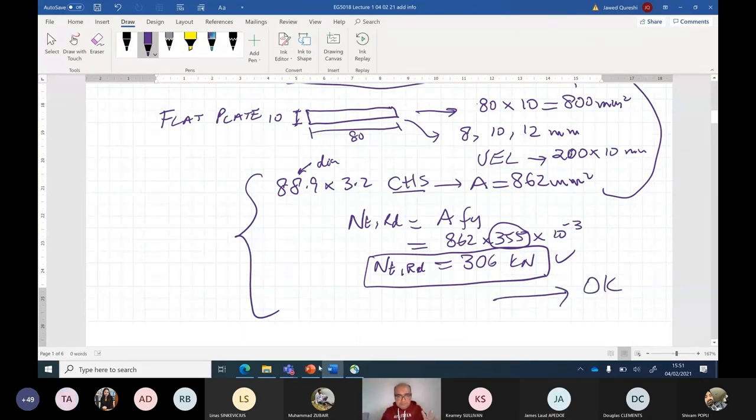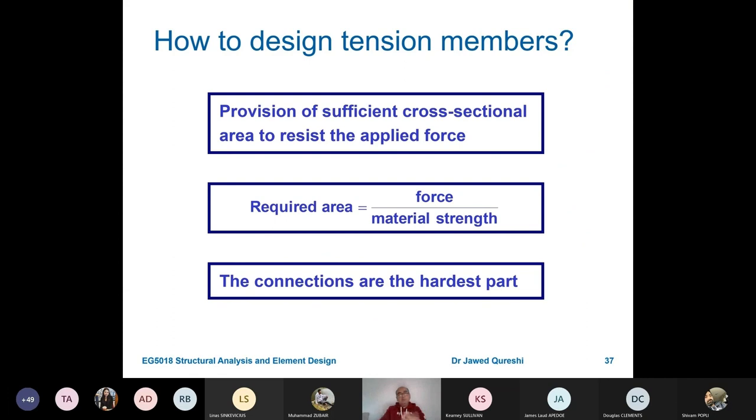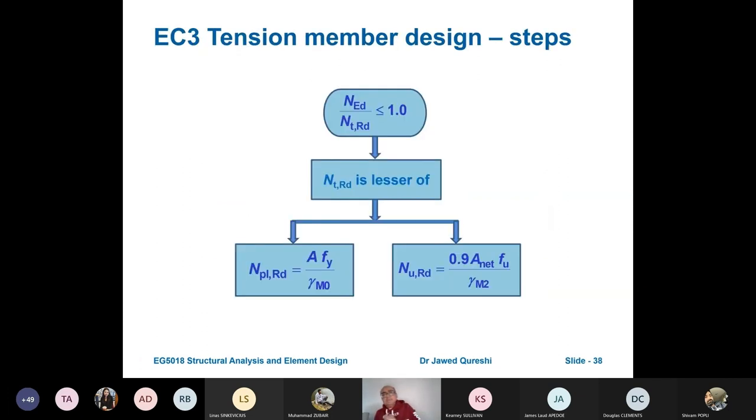So now you know the basic level of tension members. You can see that the required area equals force over material strength. All you need to do is simply provide the required area. The steps are that NED, the applied load, divided by NTRD, the capacity, should be less than or equal to 1, which means that the capacity has to be higher. In our case, in the example, we had 200 divided by initially 220, and later when we used CHS, it was 200 divided by 306, which is certainly less than 1. But obviously according to code, you have to use NTRD, which is the smaller of these two.